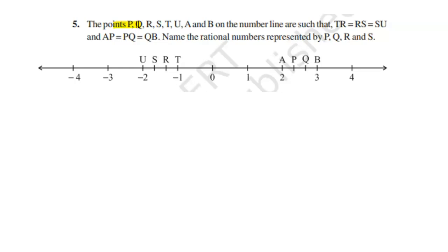Today's question is: the points P, Q, R, S, T, U, A, and B on the number line are such that TR equals RS equals SU. These three differences will be the same.